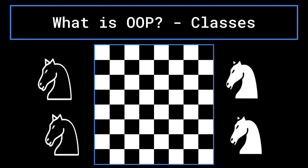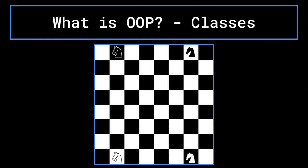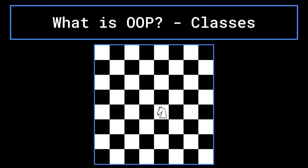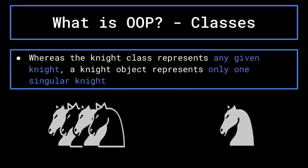For instance, each of the four knights that begin in a game of chess start on different squares than one another. Initializing the position variable in the knight class would imply that you want each knight object created from this class to begin with the same position, which you do not. However, each of the knights would behave the same in terms of the squares it could move to based on their position. Thus, it is best to define a move function in the class rather than repeating the same function definition in each object that you create. Whereas the knight class represents any given knight, a knight object represents one knight in particular.